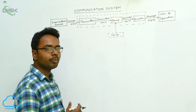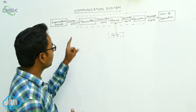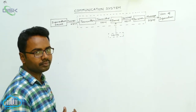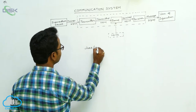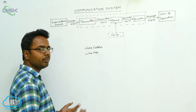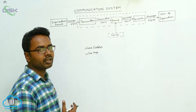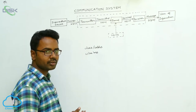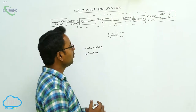The transmitted signals propagate through the channel. The channel is the physical medium that connects the transmitter and receiver. The channel may be wired — such as wires, pins, or cables — or wireless. For example, in mobile communication the channel is wireless space, while in landline communication the channel is the wire.